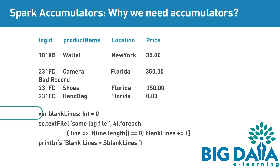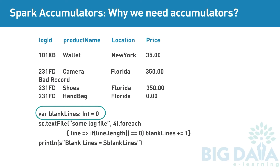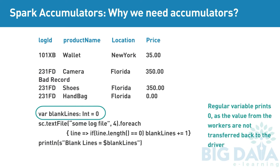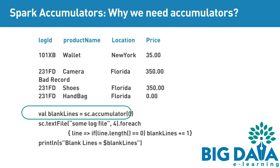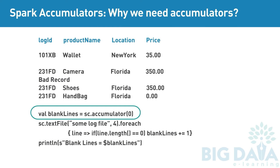If we use a regular variable instead of an accumulator, the variable will print 0 when the driver tries to print it. This is because, since it is a regular variable, the value from the workers are not transferred back to the driver. Now let me try to use an accumulator in the place of a regular variable. Now the results are sent back to the driver, and this should print the accumulated values as we expected.